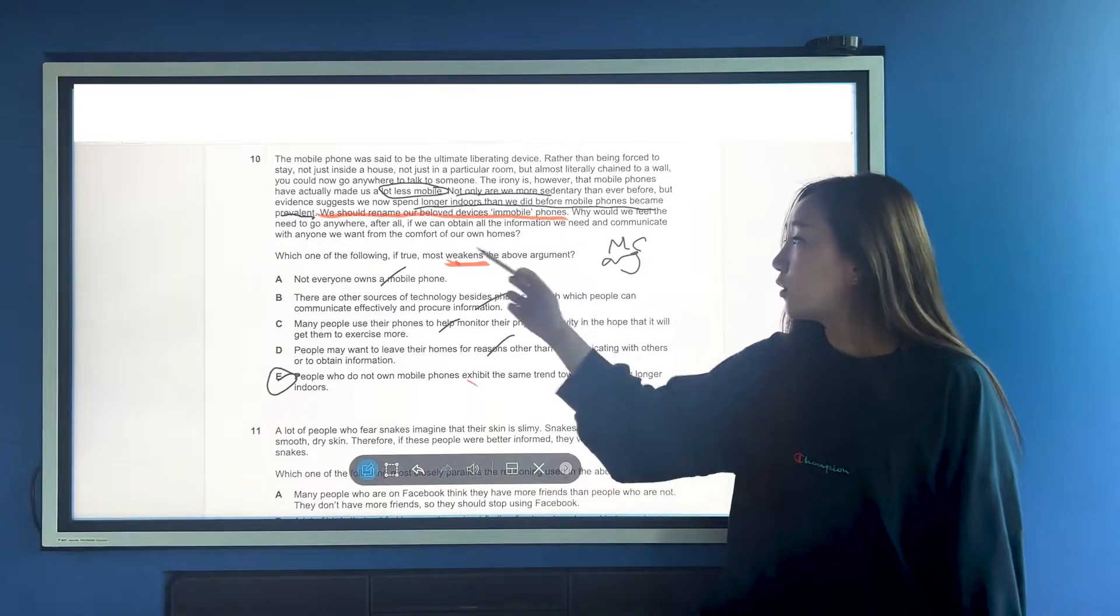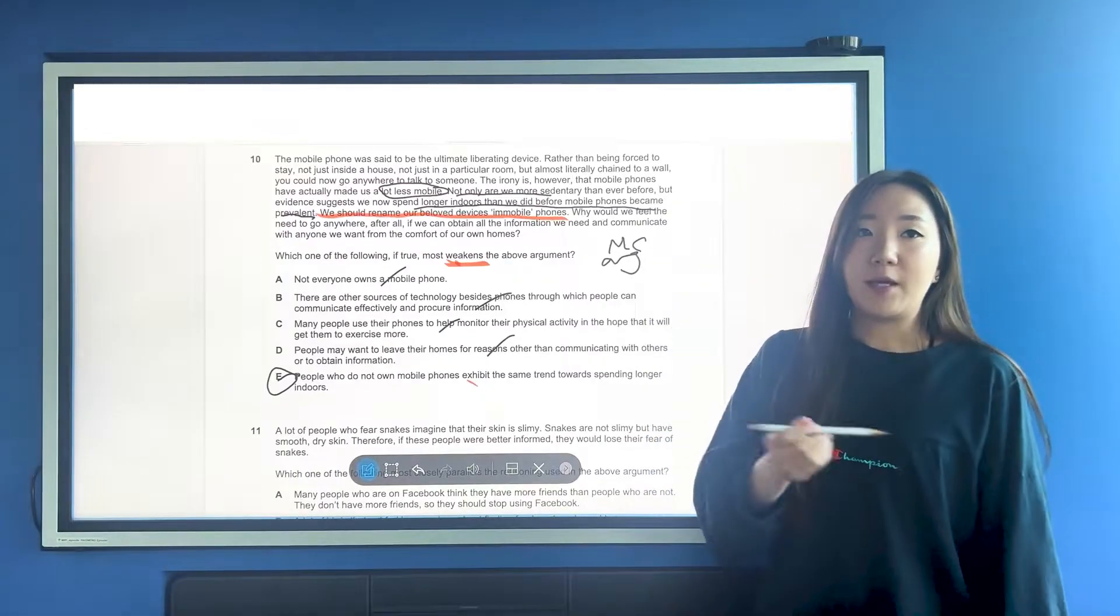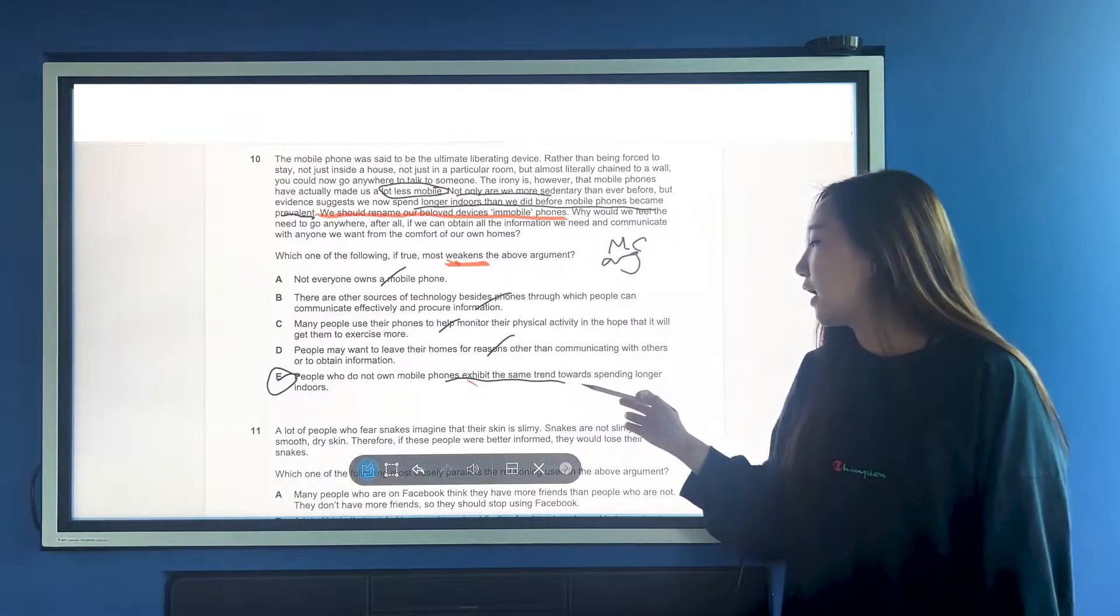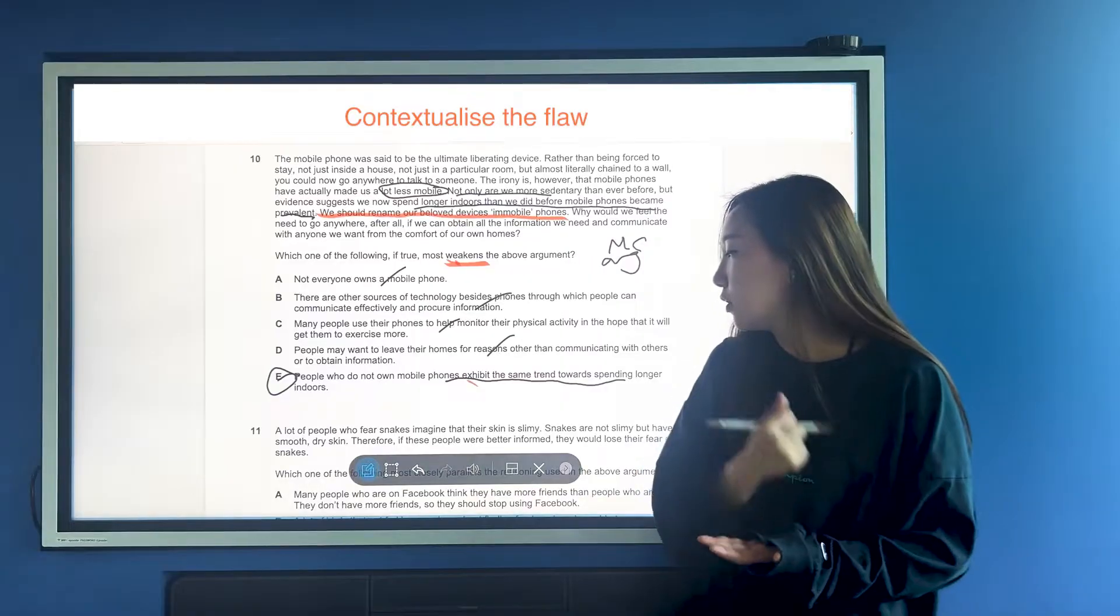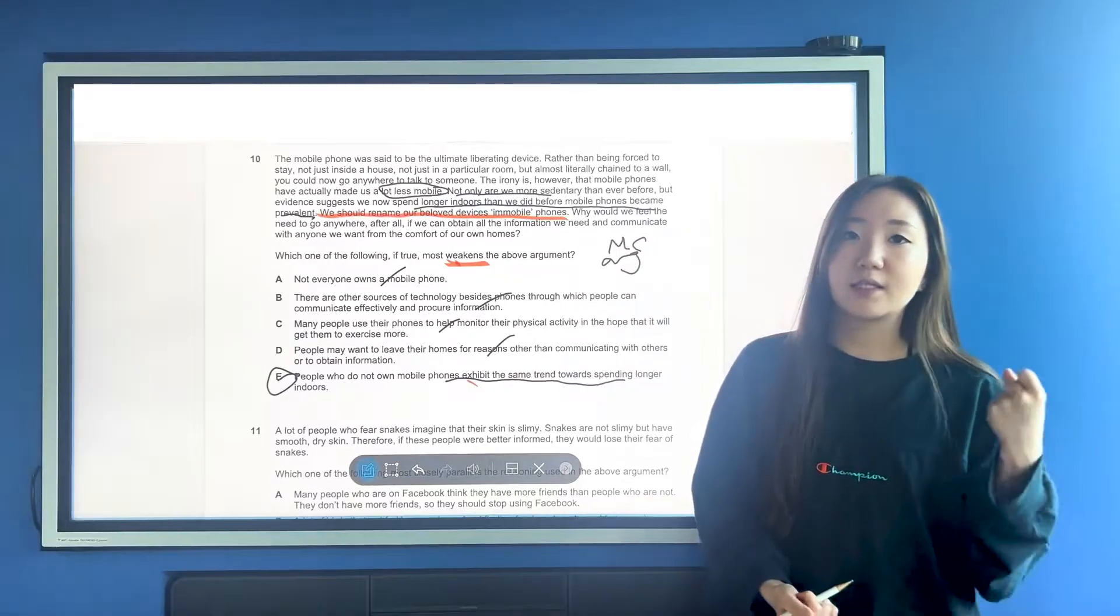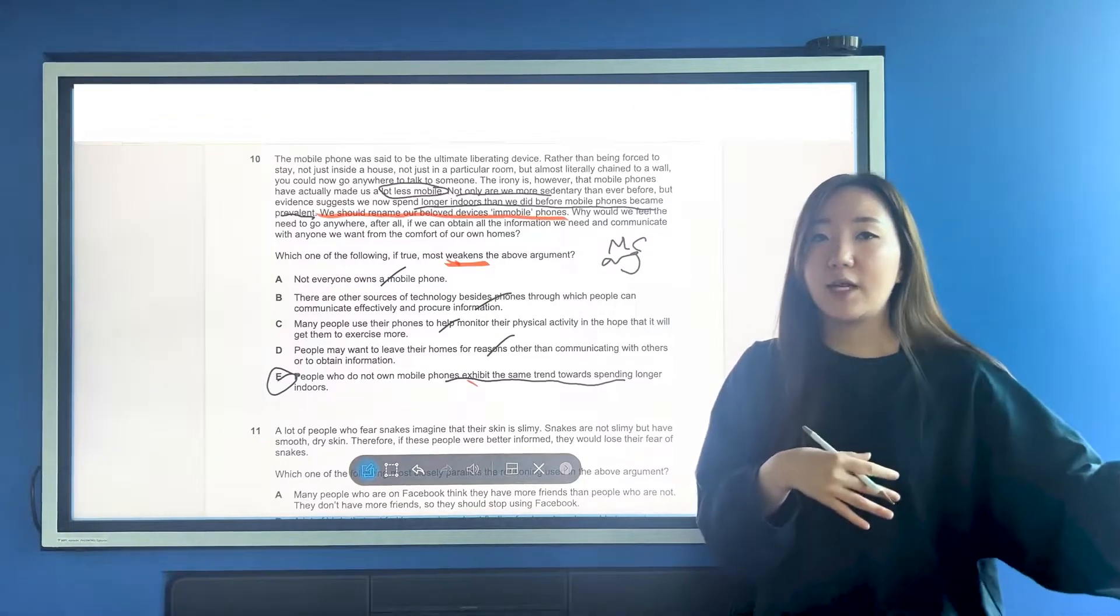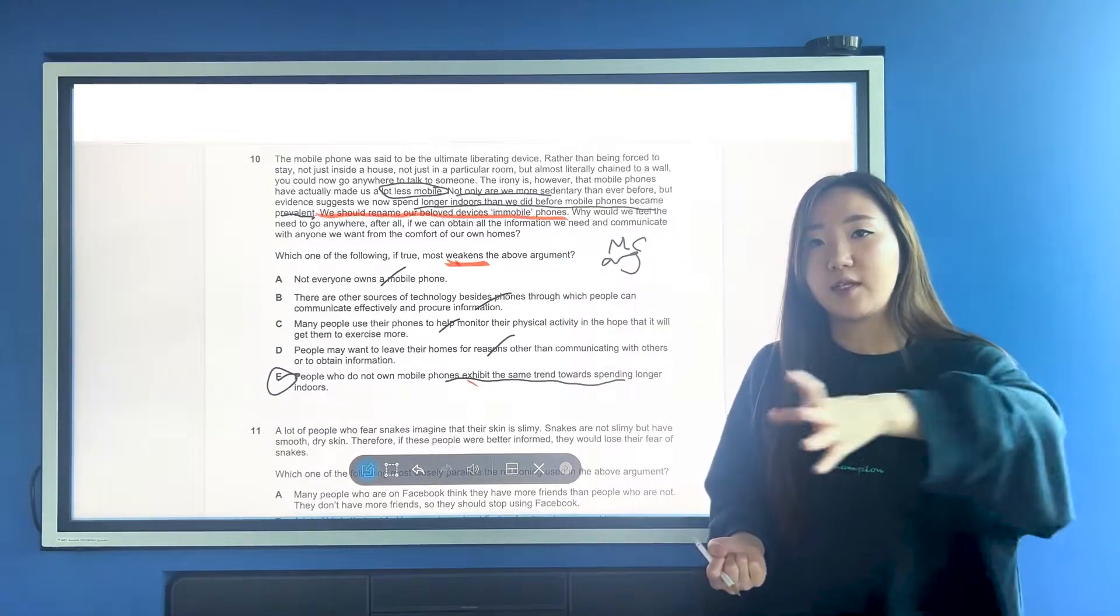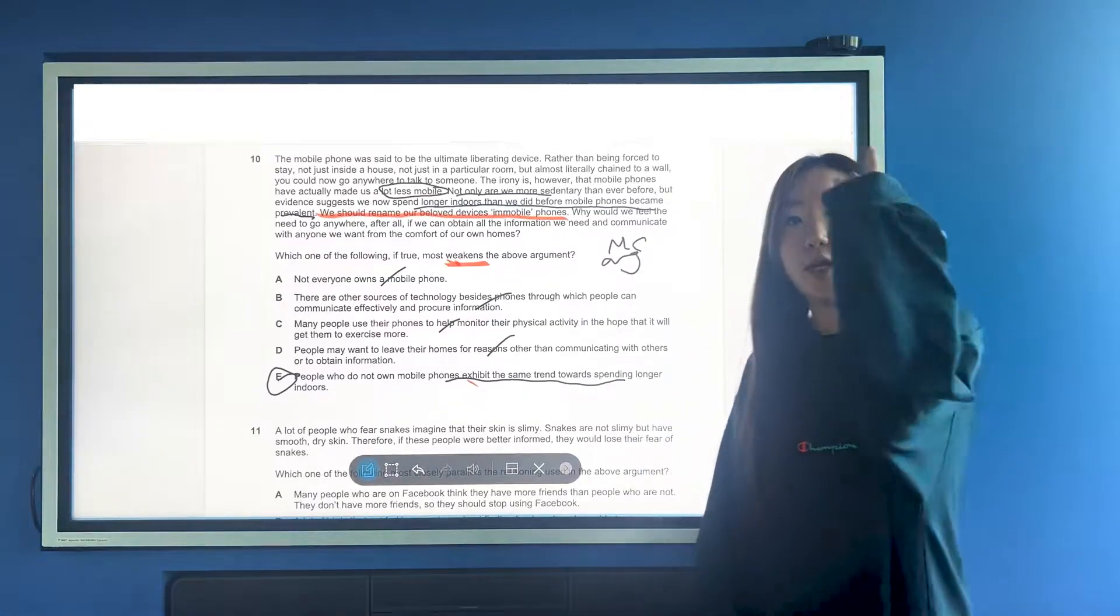And then E, people who do not own mobile phones exhibit the same trend towards spending longer indoors. If this were identified a flaw question, it would have said something along the lines of there may be another reason explaining both trends. Now that it's a weakness, we want to have an actual something related to this. If you have people who don't own phones exhibiting the same trend towards spending longer inside, then we know there is a third factor C that is causing both the sedentary lifestyle and the mobile phone use.